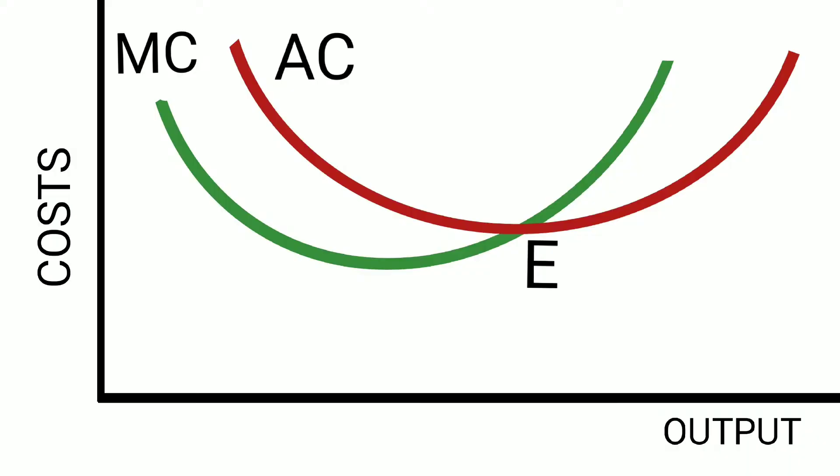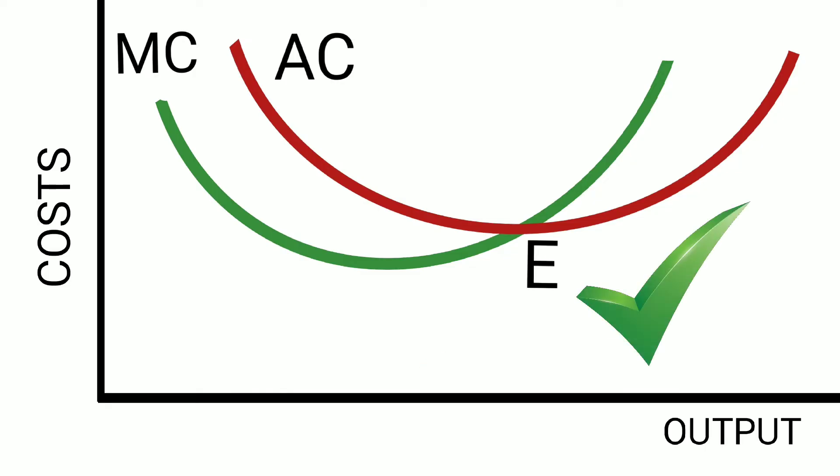Now I will show you what is the correct form of diagram to show the relationship between AC and MC. Have a look at the diagram. You can see that MC is passing through AC at its minimum — point E is the minimum point of AC. So it is a correct diagram.